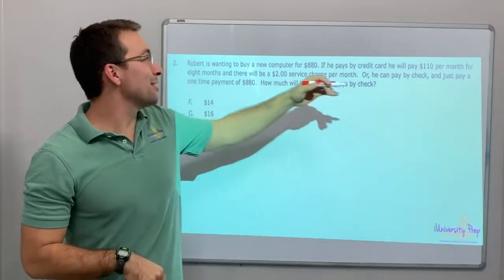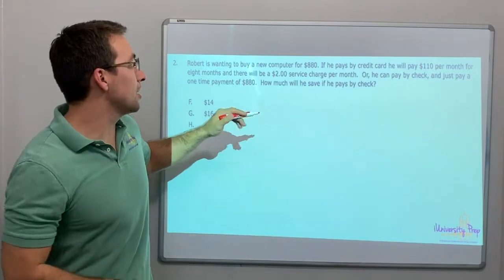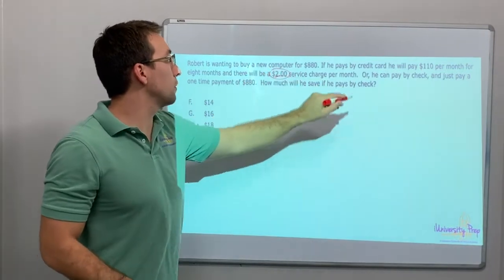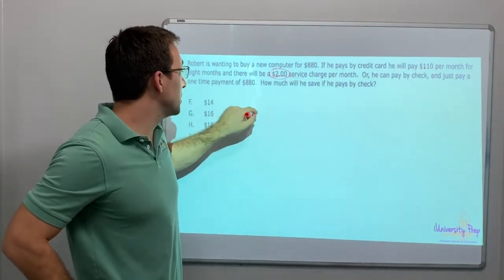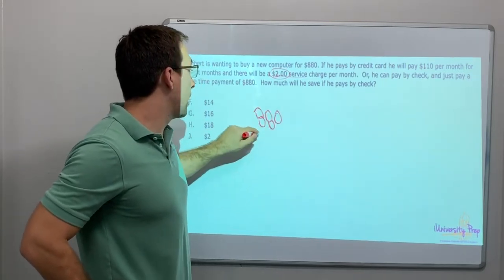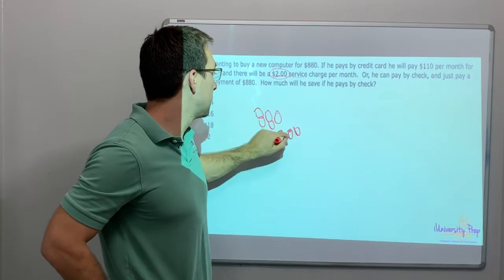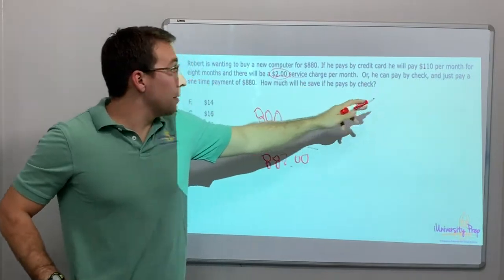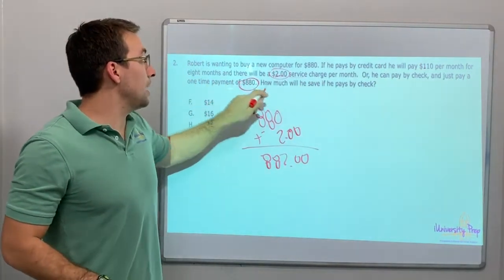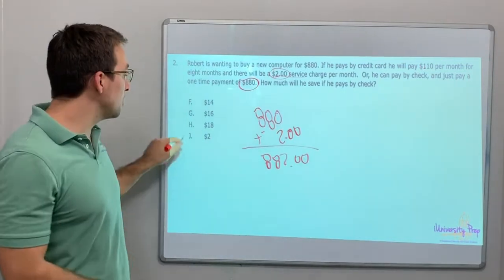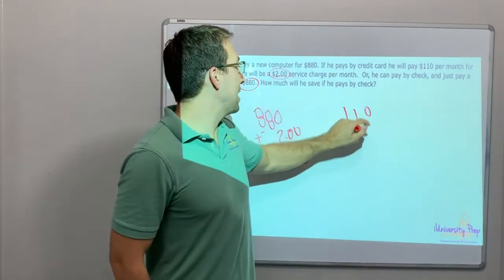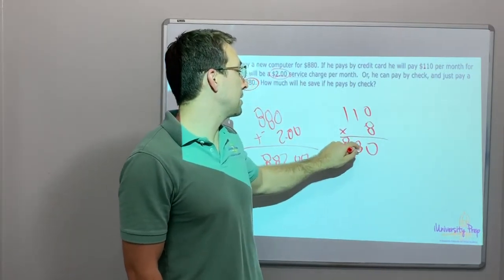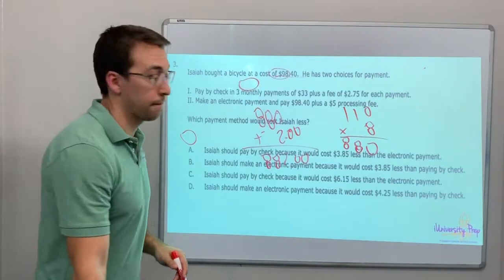Robert is wanting to buy a new computer for $880. If he pays by credit card he'll pay $110 per month for eight months and there will be a $2 service charge. So 110 times 8 is $880 plus two dollars is $882. Or you can pay by check and just pay a one-time payment of $880. How much will he save if he pays by check? He'll save two dollars. And I'll show you the math: 110 times 8 because there's eight monthly payments. 0, 8, 8. There you go.